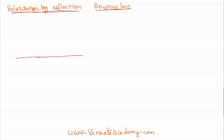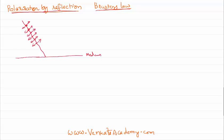Let us consider this is a medium. This is the boundary separating the two media — above the line there is one medium, below the line there is another medium. Let us imagine this as an incident light. This incident light is an unpolarized light, so it has vibrations both in the plane as well as in the perpendicular plane. Vibrations in the plane are shown with double-edged arrows, and vibrations perpendicular to the plane are shown with dots, which represent double-edged arrows going into the paper. This is the point of incidence and this is the normal.